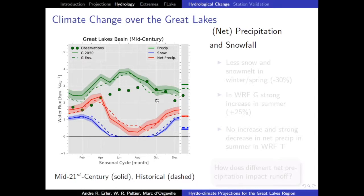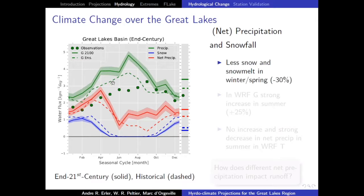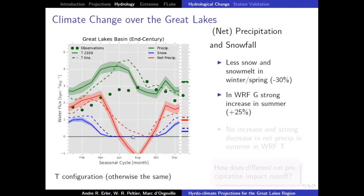Looking at climate change projections, the dashed line is historical and the solid line is end-century. In the G configuration, there is a large increase in precipitation in summer and also in winter, and as a consequence an increase in net precipitation — the increase in precipitation outpaces the increase in evaporation. There is also an obvious decrease in snow. But in the T configuration, precipitation was high to begin with and then goes down a bit in summer — actually more of a shift earlier in the year — and net precipitation becomes negative: evaporation outpaces the increase in precipitation.